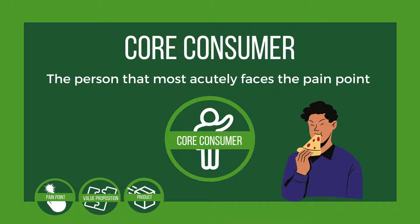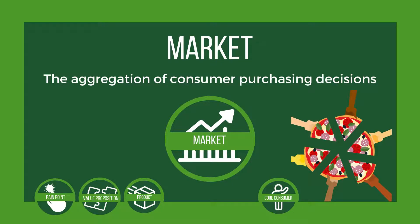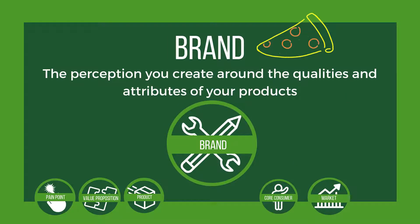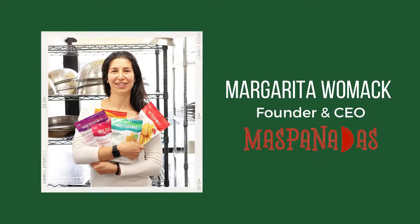The next element is core consumer — the person that most acutely faces the pain point you've designed your product to solve. Fifth, we have market, which represents the aggregation of consumer purchasing decisions. Finally, the sixth element is brand: the perception you create around the qualities and attributes of your products.